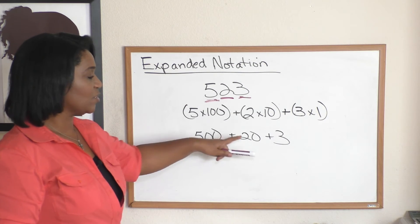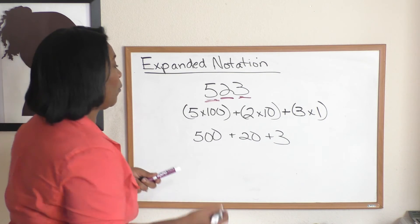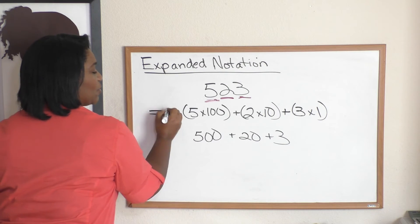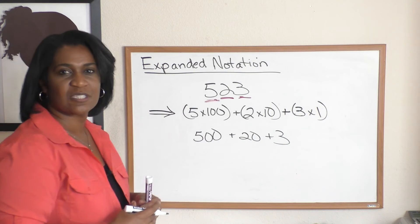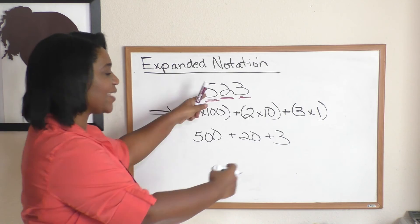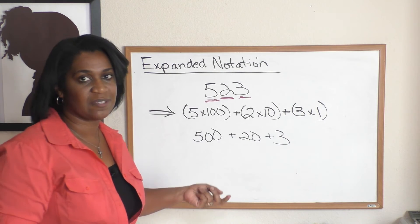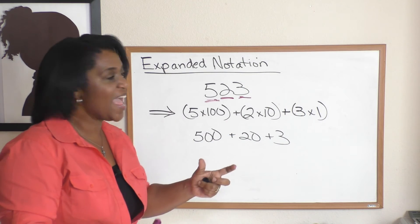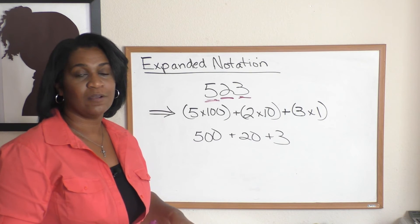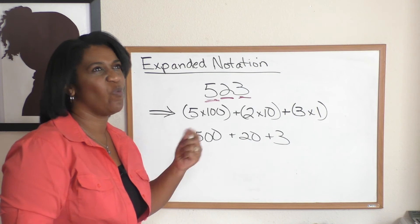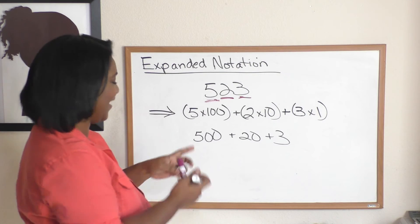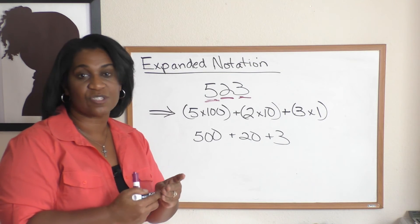Now when we come down to the bottom, we see 523 is what it totals up to. But we've used what's called expanded notation right here to give us a sense of how we got to this number in the first place. We had five one hundreds, we had two tens, and we had one or we had three ones, one three there you go.